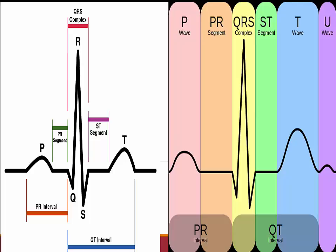PR interval: 0.12 to 0.20 seconds. QRS: 0.06 to 0.10 seconds. QT interval is less than 0.40 seconds.